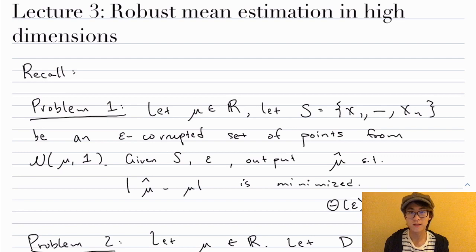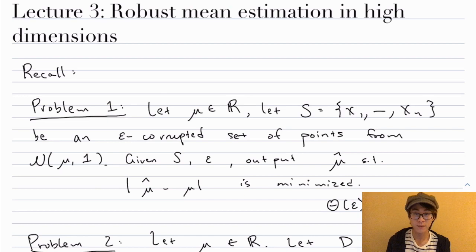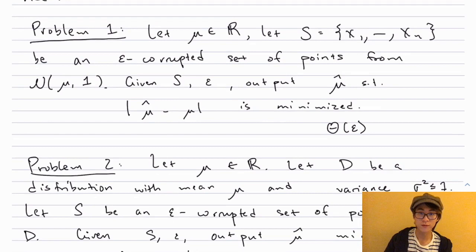Hello, this is the third lecture in my sequence of video lectures on robust statistics. In this class we will consider robust mean estimation for the first time in the high-dimensional setting. Let's recall the two univariate learning problems we considered in the first two lectures. I claim that there will be natural high-dimensional analogs of both.